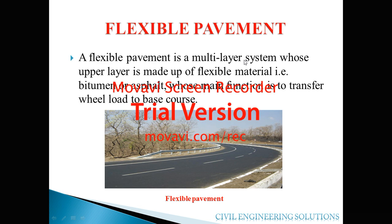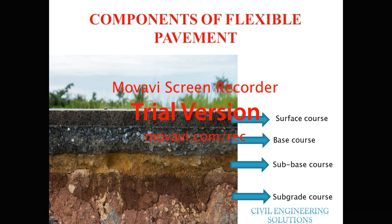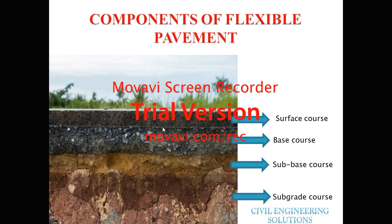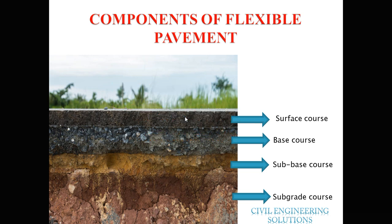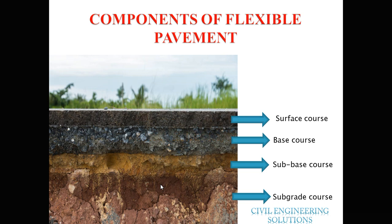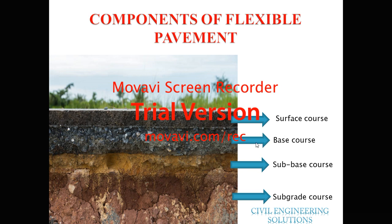The components of the flexible pavement are: the surface course, base course, sub-base course, and subgrade course. The cross-section of the road shows all these layers comprising the total flexible pavement. The uppermost layer is the surface course, on which traffic is moving — this layer provides a finished surface for vehicles to move evenly and comfortably. The subgrade course is the portion on which the whole pavement rests. Above it is the sub-base course, then the base course, and finally the surface course.